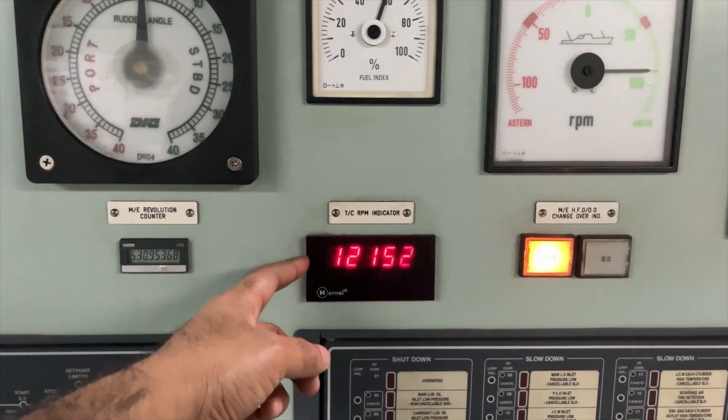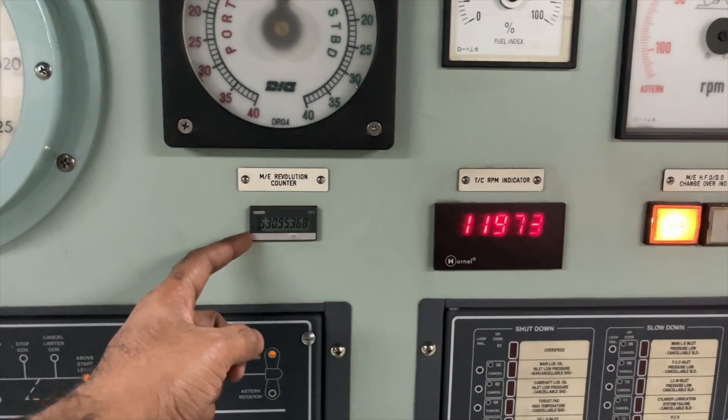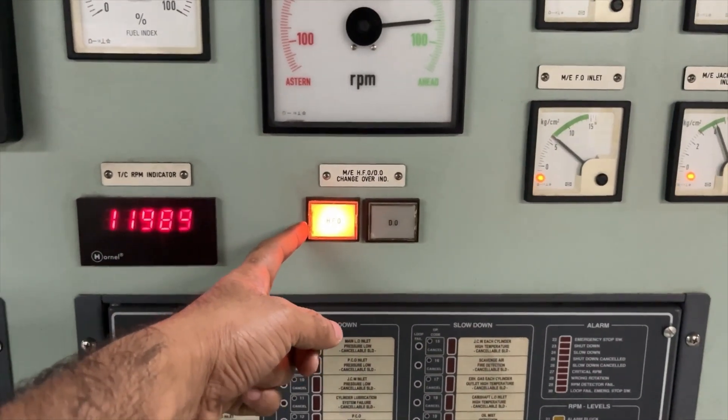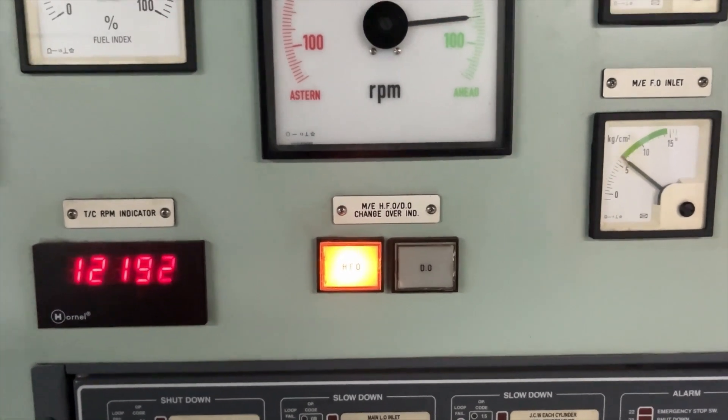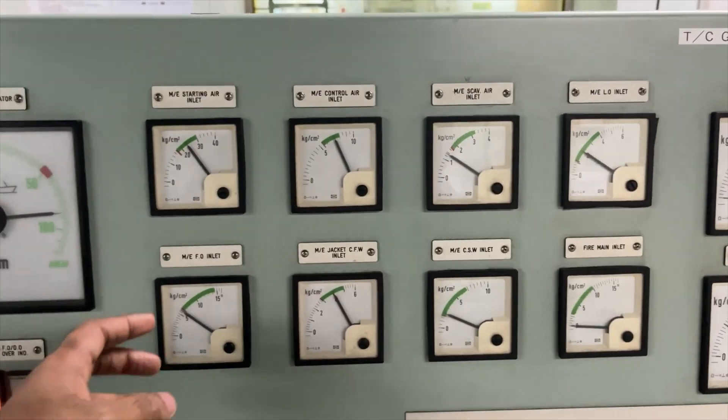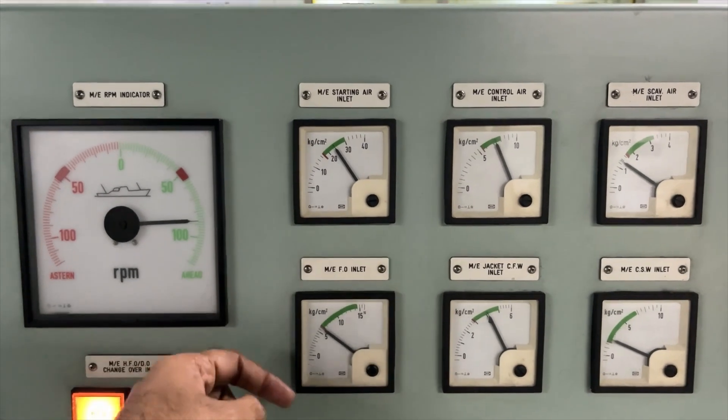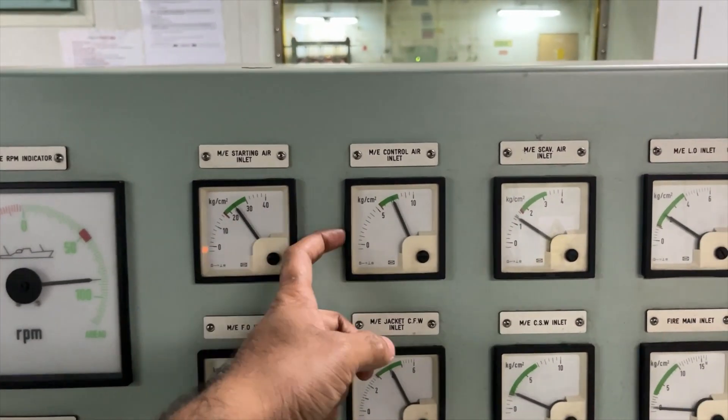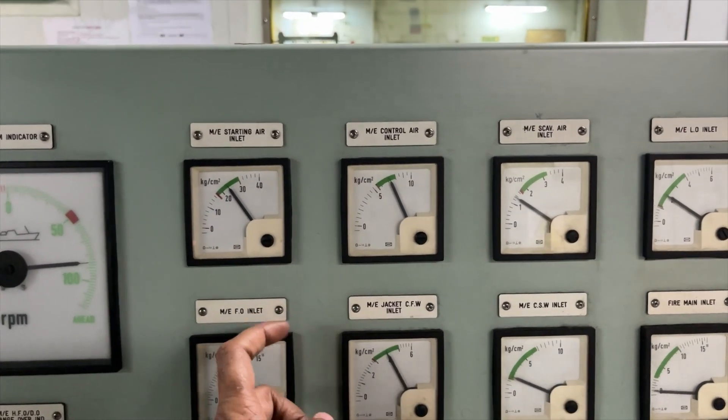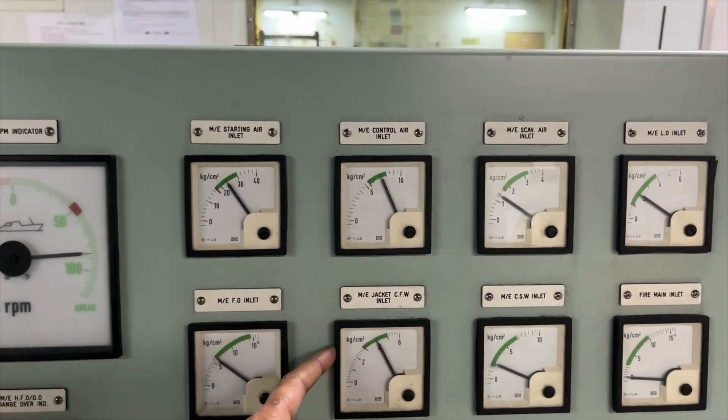And this is your turbocharger RPM indicator, main engine revolution counter. Main engine is right now running in HFO so the HFO indication is indicating it. This side you will see main engine starting air inlet indication, main engine fuel inlet pressure, main engine control air inlet pressure, main engine jacket cooling fresh water inlet pressure.